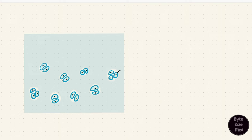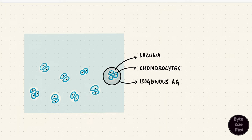These cells are chondrocytes, and they're located in spaces called lacunae. Multiple spaces are lacunae. A single space is a lacuna. They could be single, or they could be in groups. That group is called an isogenous aggregate.